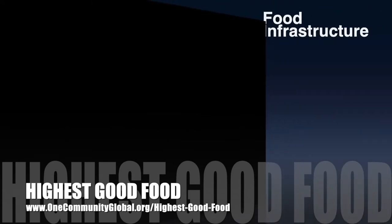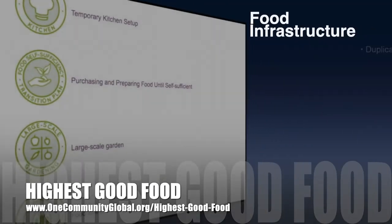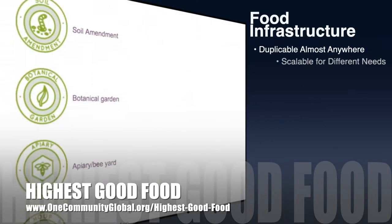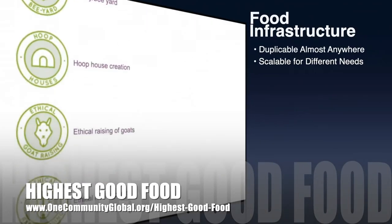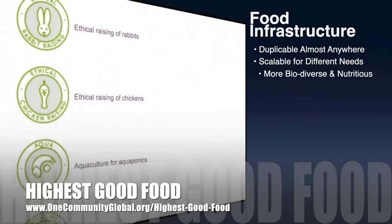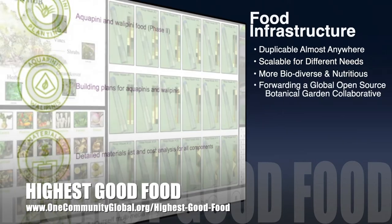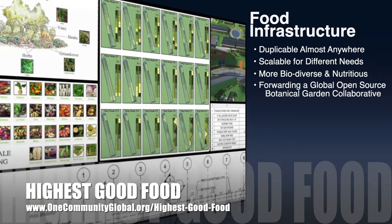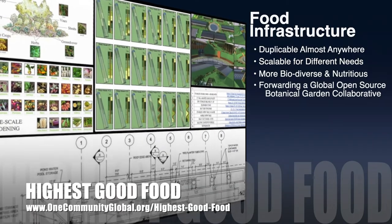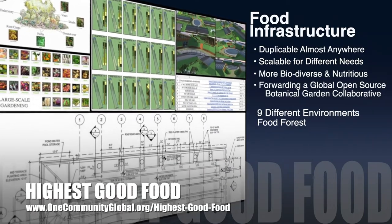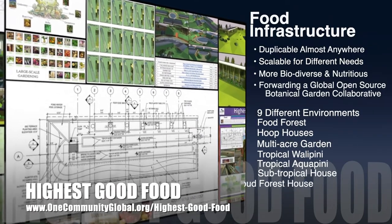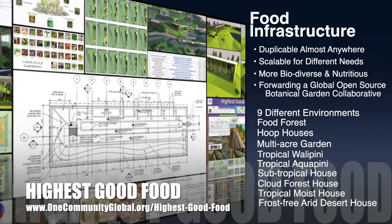One Community's approach to highest good food is duplicable almost anywhere, scalable for different needs, more biodiverse and nutritious, part of forwarding a global open source botanical garden collaborative, and includes nine different free shared and duplicable growing environments.